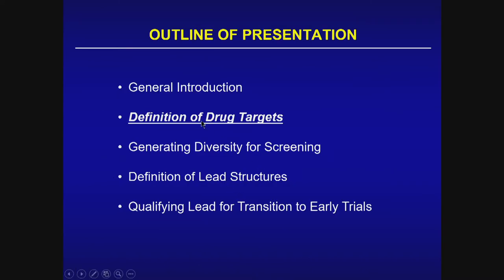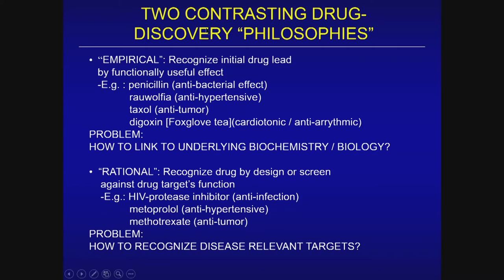So how do we define drug targets relevant to bringing molecules forward for a disease? There are two contrasting drug discovery philosophies. A so-called empirical process, whereby one recognizes the initial drug lead by a functionally useful effect, did dominate the landscape until the middle of the last century. Examples include penicillin found by its antibacterial effect with Dr. Fleming's bacterial clearing action, and Rauwolfias having antihypertensive effects in model systems.